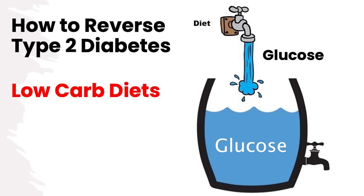Type 2 diabetes is essentially an overflow problem. Your body has too much sugar, can't handle it, and the sugar is spilling out into the blood. Imagine a rain barrel. The water is like the glucose, your body is like the barrel. The barrel can hold a certain amount of glucose, but if you get too much, it's going to spill out over the top. And when it spills out over the top, that's when you have problems.